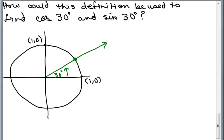So how could this definition make sense if we were looking to find the cosine of 30 degrees and the sine of 30 degrees? Now, of course, we know what the cosine and sine is from other methods. We could certainly just draw a right triangle and see it.